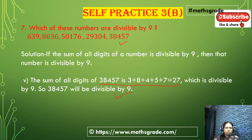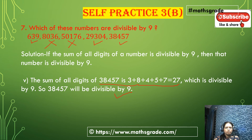In this question: 639 is divisible by 9; 8,036 is not divisible by 9; 50,176 is not divisible by 9; 29,304 is divisible by 9; and 38,457 is divisible by 9. So in this question, 639, 29,304, and 38,457 — these three numbers are divisible by 9.